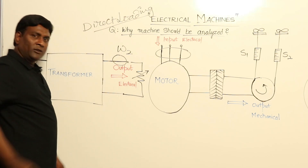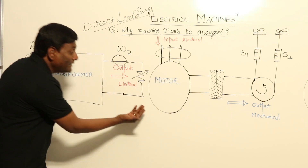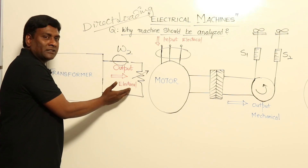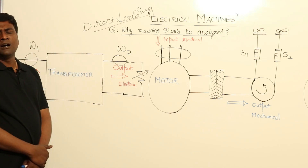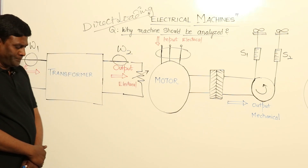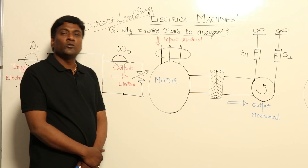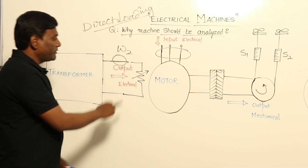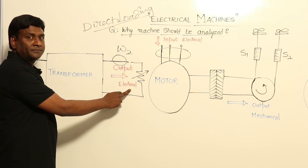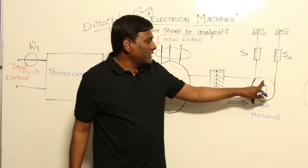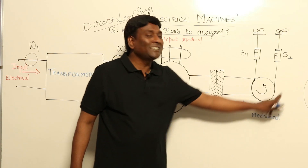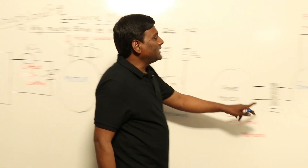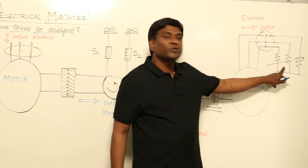In a direct loading test, a load is directly connected and all performance characteristics can be calculated. However, there are two disadvantages. First, the output power has to be wasted — in a motor, output power is dissipated as friction, and similarly in a generator the output power must be wasted.